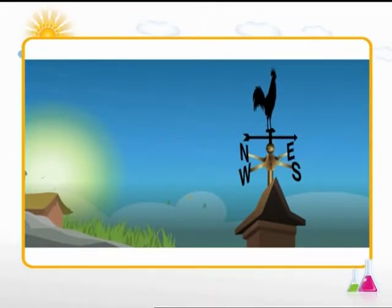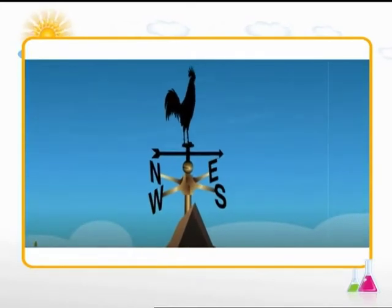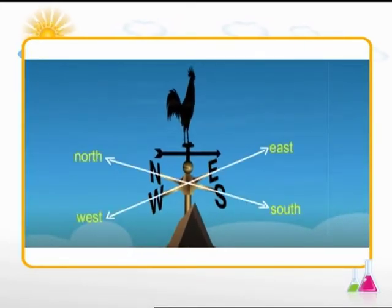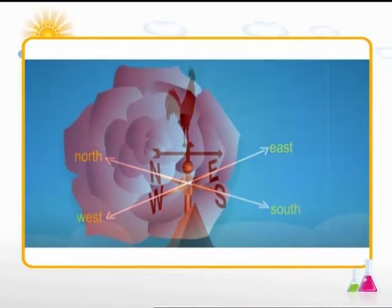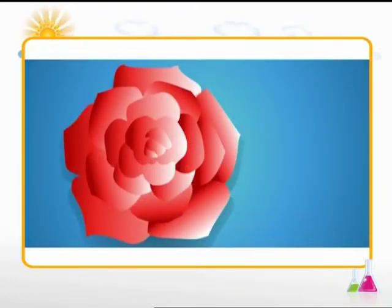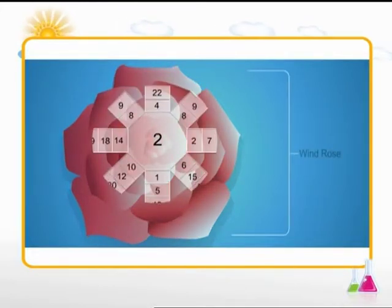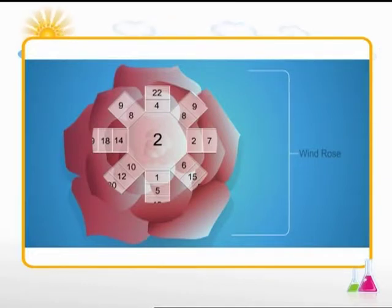Wind direction is usually given by referring to the four compass points: north, south, east, and west. A wind rose is a graph made by plotting the wind direction for each day of the month.